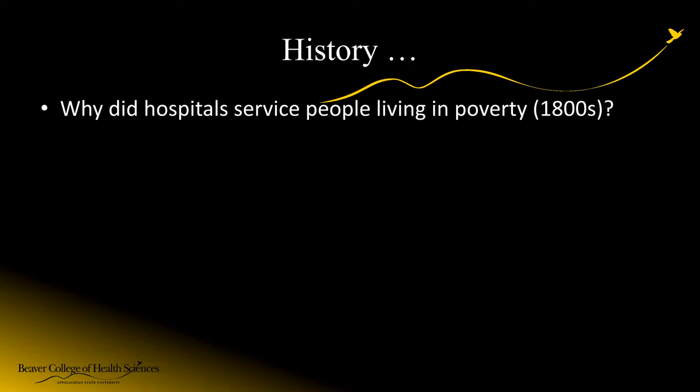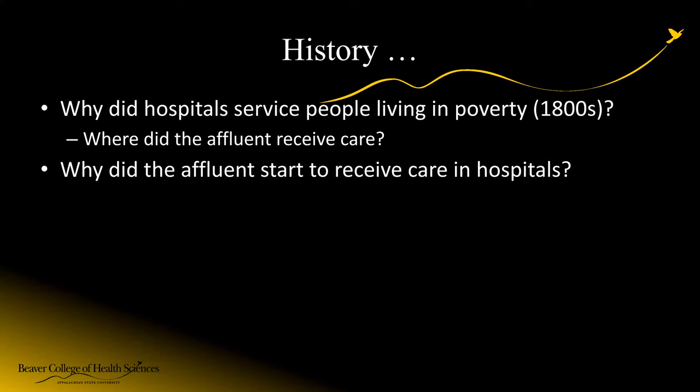When we think about the history of hospitals, we have to understand how hospitals came to be, especially in the United States. Why do we have a history of hospitals serving specifically people living in poverty? Looking back to the 1800s, this was really care for those who were medically indigent, who didn't have other resources and options. Individuals who did have means received more of a concierge medicine experience — a physician would come visit you in your home.